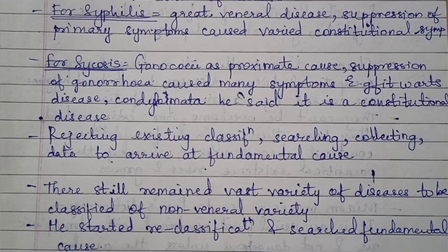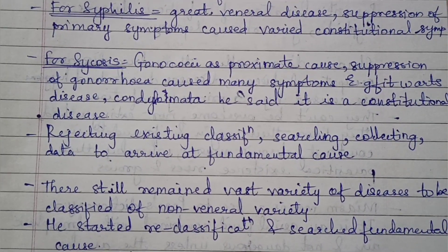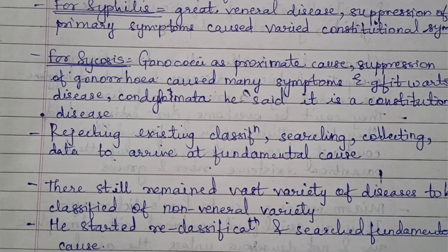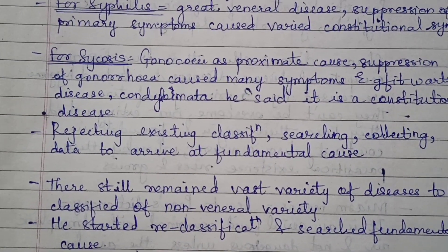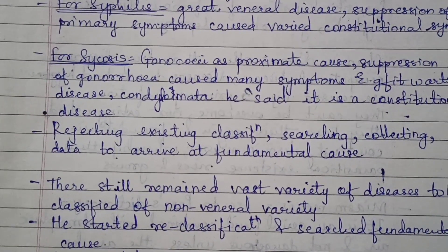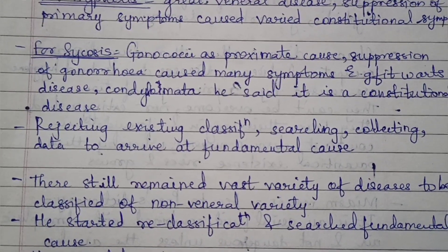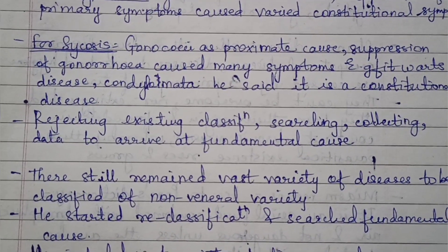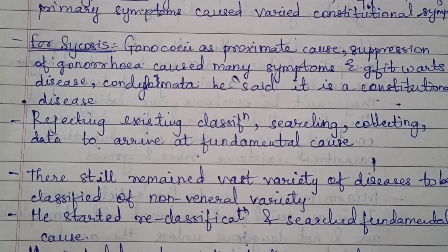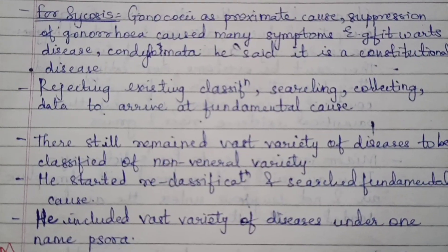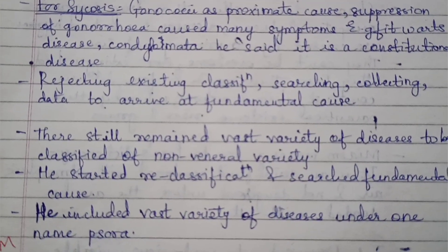For Syphilis — the great venereal disease — suppression of primary symptoms caused varied constitutional symptoms. For Sycosis, gonococci as the proximate cause; suppression of gonorrhea caused many symptoms, for example fig warts, condylomatous.